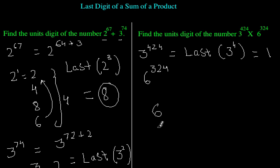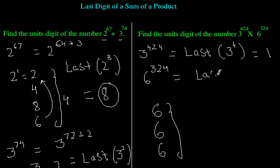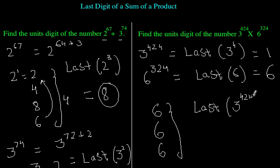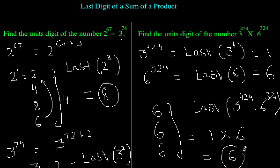For 6 raised to power 324, checking the pattern: 6, then 6 times 6 is 36 — the last digit is always 6. So the last digit of 3^424 times 6^324 is 1 times 6, which equals 6. So 6 is the required answer.